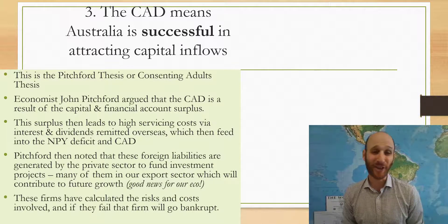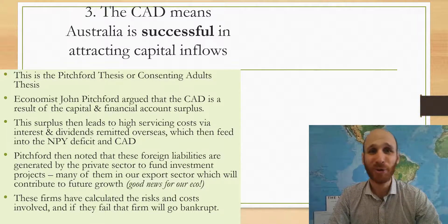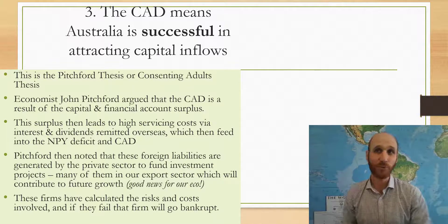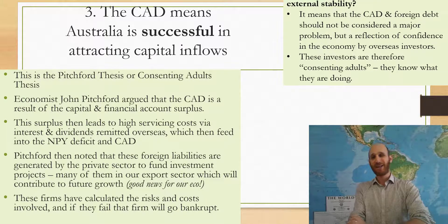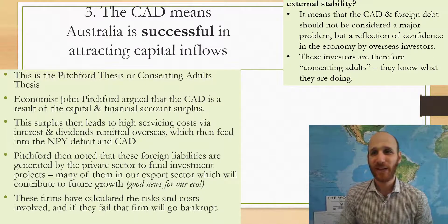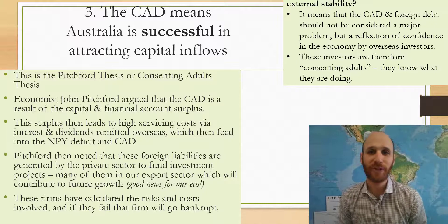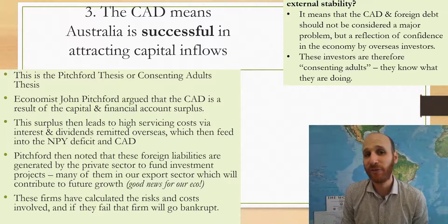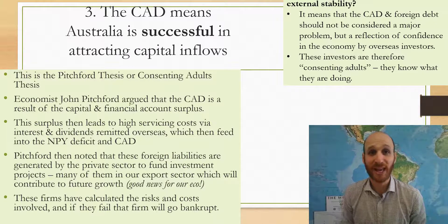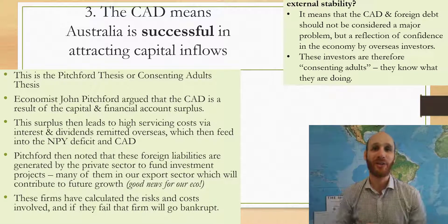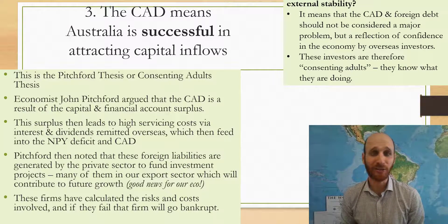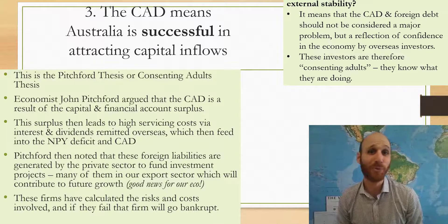These firms have done their sums, and if they fail, the firm will go bankrupt — but they are aware of the risks they're taking on. In terms of external stability, this means that the CAD and foreign debt should not be considered a major problem. Instead, it reflects the confidence foreign investors have in investing in Australia. These investors are therefore consenting adults — they know what they're doing, they're taking appropriate risks, and these capital inflows are for positive investment projects that will help the Australian economy.